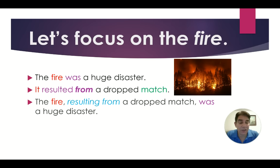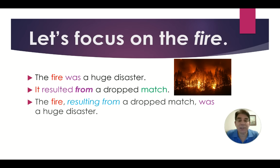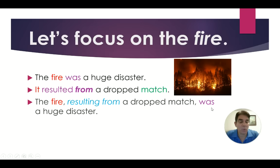Now let's focus on the fire and combine two sentences into one. The fire was a huge disaster. It resulted from a dropped match. The main subject here is 'the fire.' When we combine these two sentences, one subject and one verb will dominate. In this case, 'the fire' is the main subject and 'was' is the main verb. We put a phrase in between the subject and the main verb: The fire resulting from a dropped match was a huge disaster.